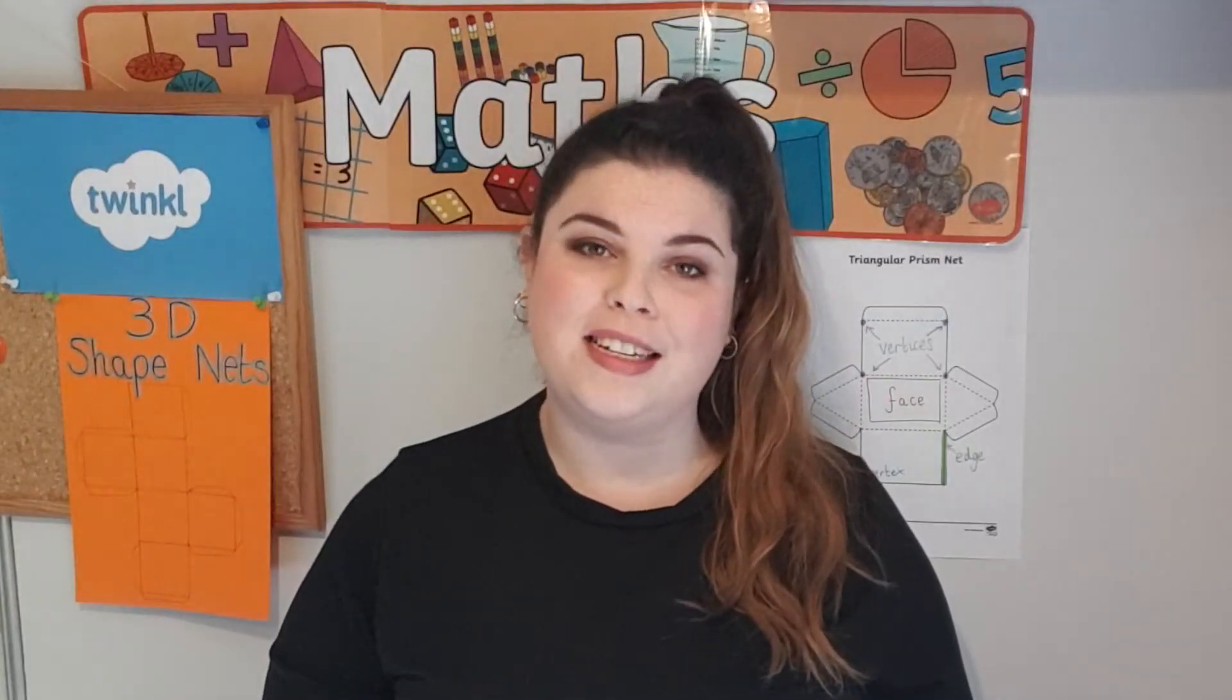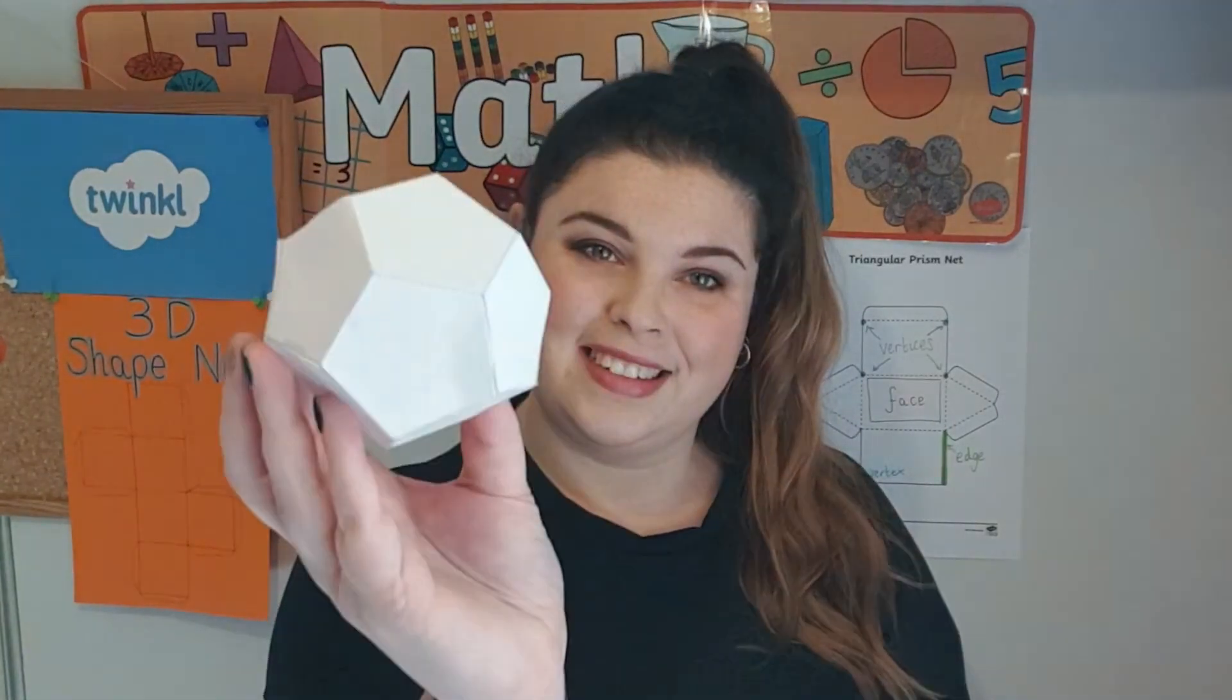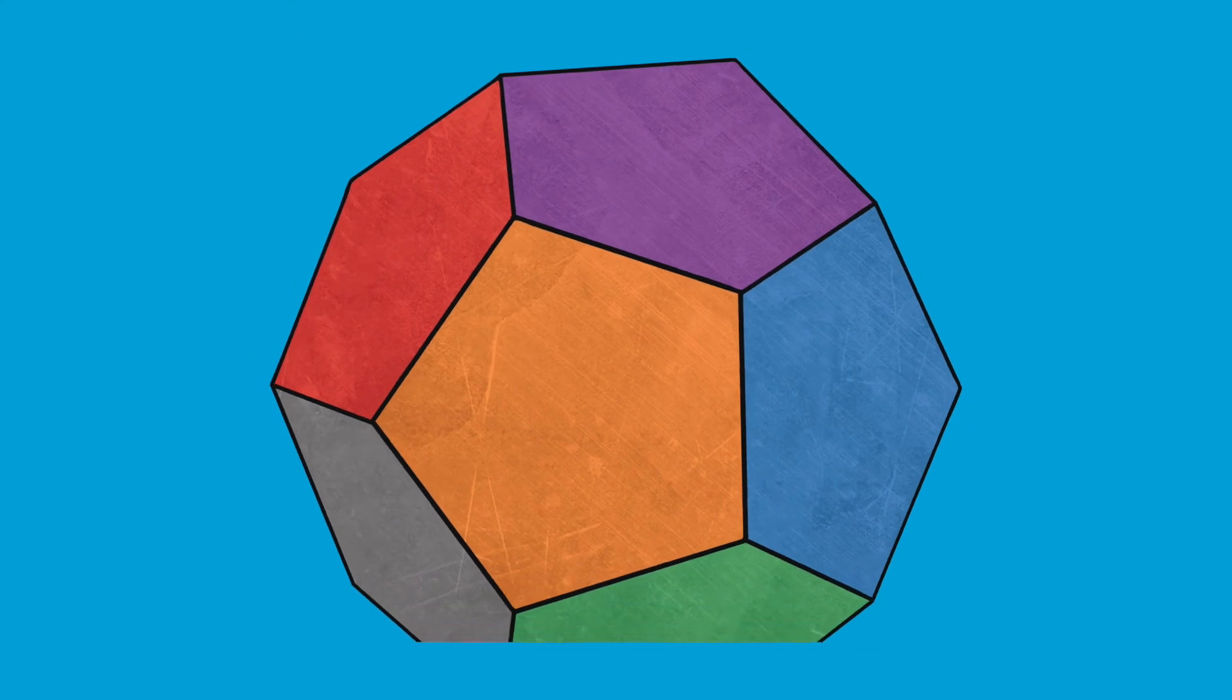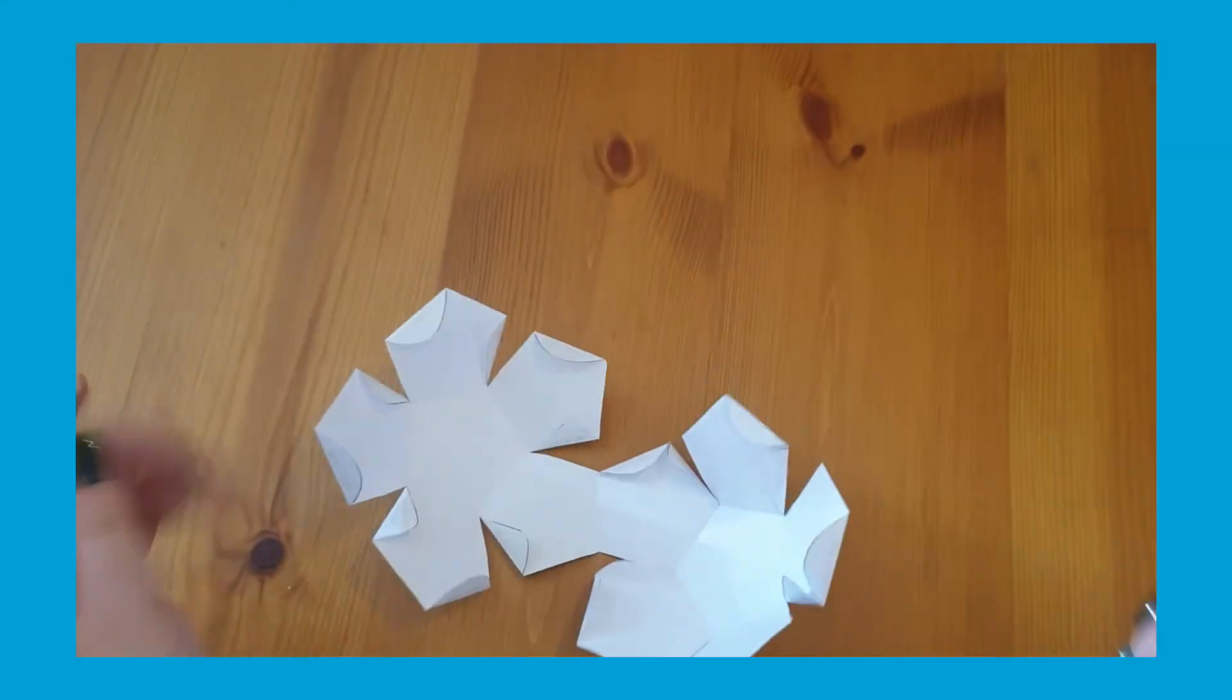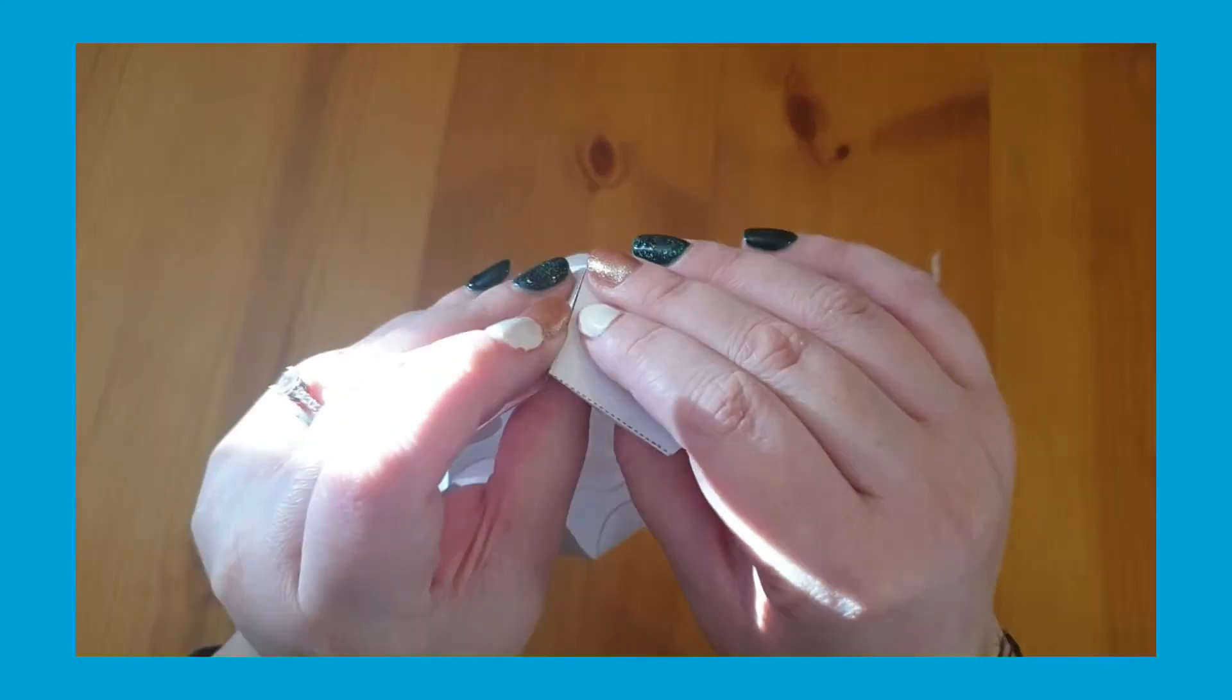One of my favorite 3D shapes and nets to build is a dodecahedron. A dodecahedron is a 3D shape with 12 faces. Each of these faces is a regular pentagon, a 2D shape with five sides.